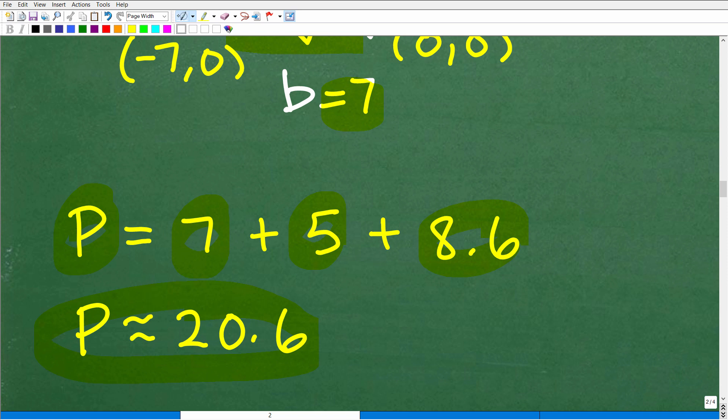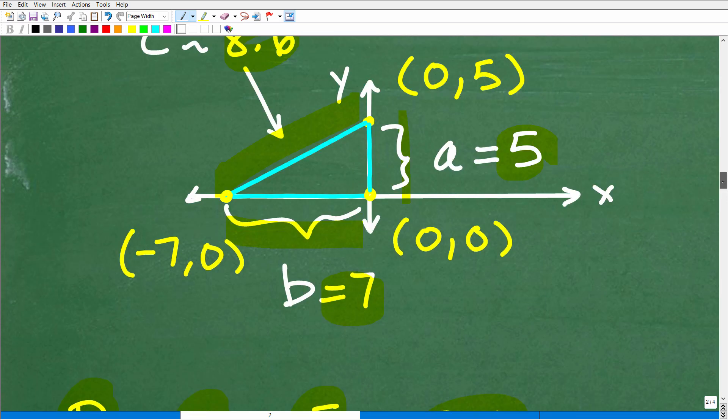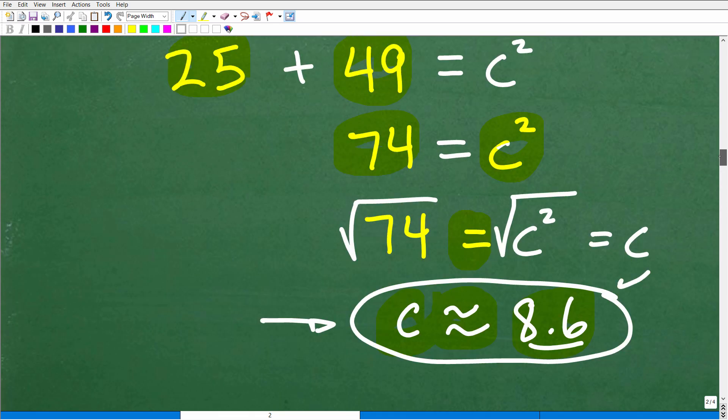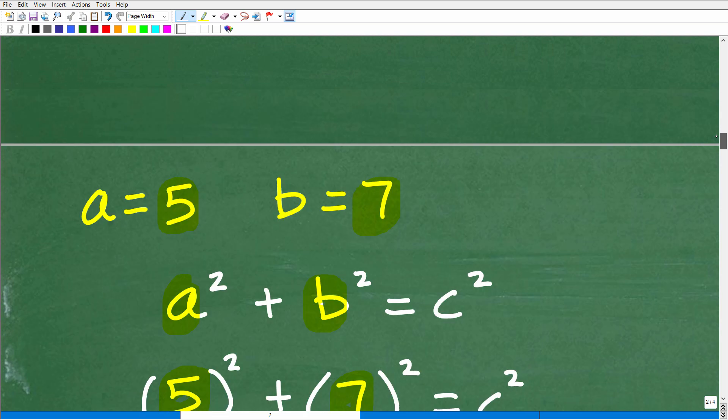And that is 20.6. So the perimeter is approximately 20.6. Hopefully you understood this problem from the beginning and didn't need any assistance. You're like, 'I already got this, Mr. YouTube math man. You're not going to trick me with your fancy problems.' But listen, if you were confused and now you get it, this is a very typical type of problem.